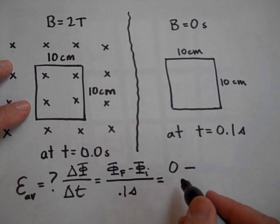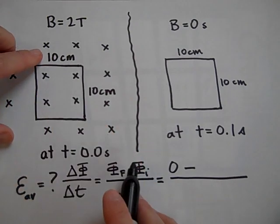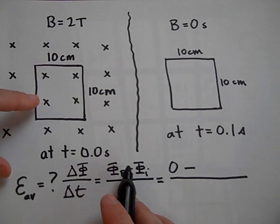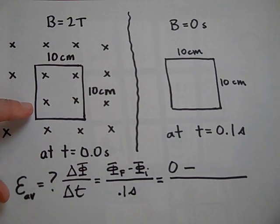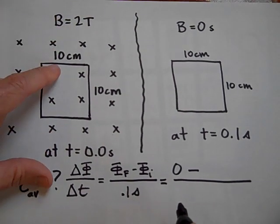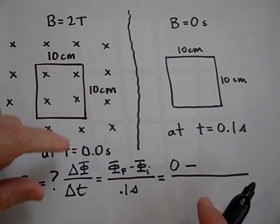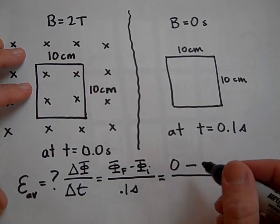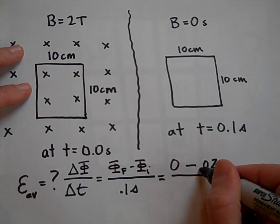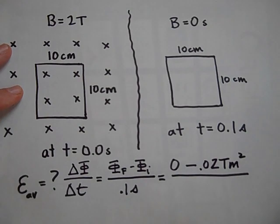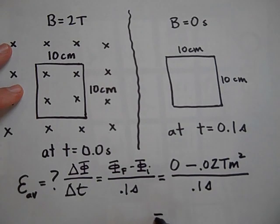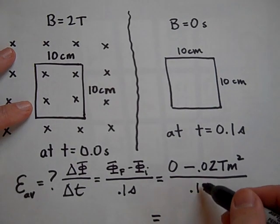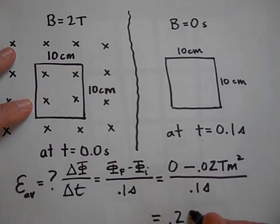Minus the initial flux. Since the B is uniform, you can pull B out of the integral and it's just B times A. So that's 2 Teslas times A, which is 0.01 square meters — that's 0.1 meters times 0.1 meters — giving 0.02 Webers. Divide that by 0.1 seconds, and the average EMF induced is 0.2 volts.